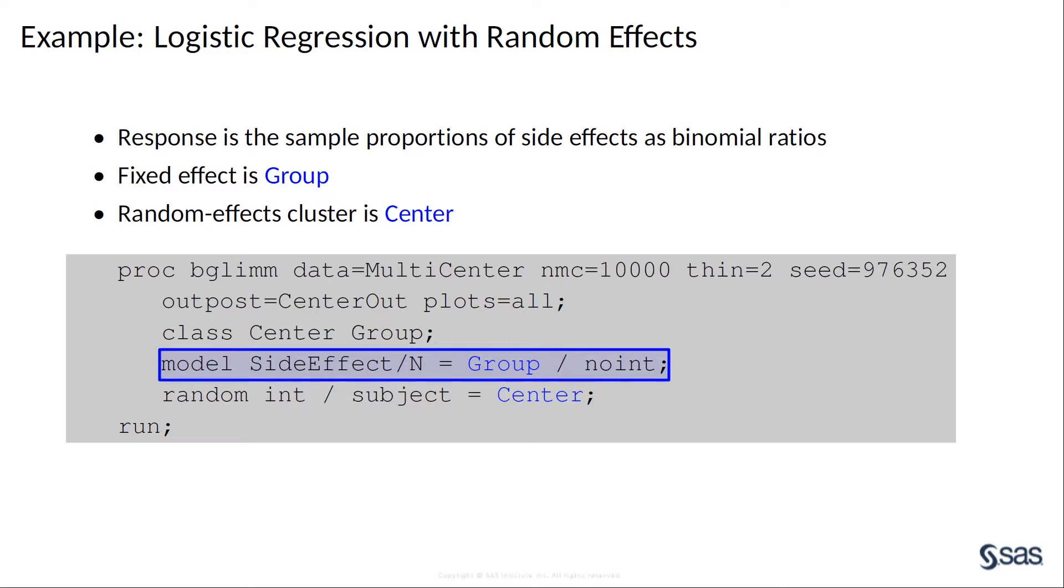Because of the events divided by trials syntax, PROC BGLIM defaults to the binomial distribution, whose default link is the logit function. The model statement specifies the group as a fixed effect.